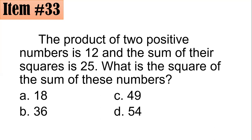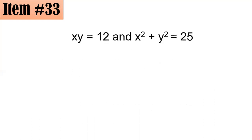Item 33: the product of two positive numbers is 12 and the sum of their squares is 25. What is the square of the sum of these numbers — 18, 36, 49, or 54? Let the two numbers be x and y, so xy equals 12 and x squared plus y squared equals 25.